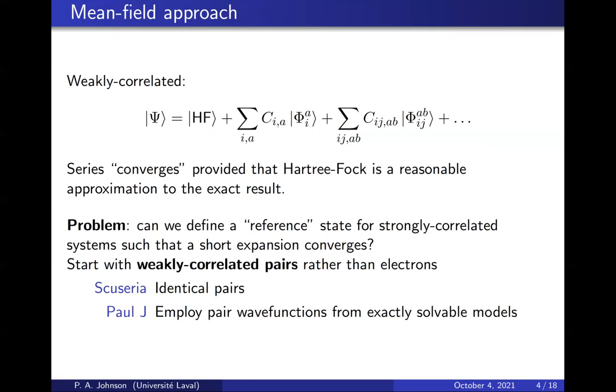So we want to do the same thing for strong correlation. Is it possible to define a reference for strongly correlated systems such that we can write a short expansion? A lot of groups have been thinking about this for a long time. One of the common themes is to think in terms of weakly correlated pairs rather than weakly correlated electrons. Gustavo Scuseria, who is an invited speaker in this session, will be describing wave functions from identical pairs, antisymmetrized geminal power wave functions.